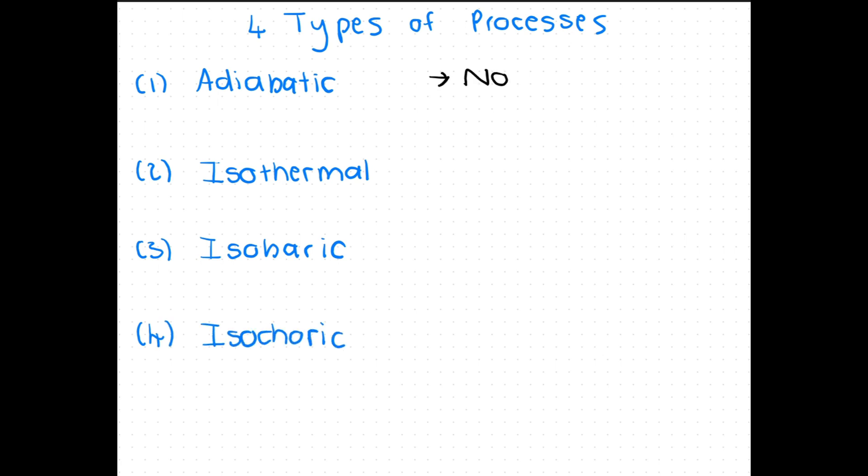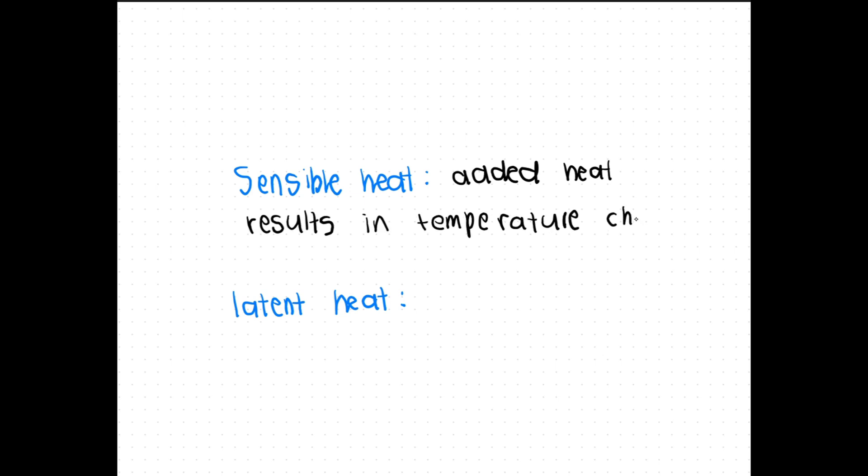Adiabatic processes are processes where there is no heat transfer. In problems or equations this is usually indicated by saying that the system is well insulated. Isothermal processes are processes where the temperature stays constant. Not to be confused with adiabatic processes, isothermal processes can still have heat flow. It is usually accompanied with a phase change. A way to remember this is that there are two types of heat: sensible heat and latent heat. Sensible heat is observed when the added heat results in a temperature change, while latent heat is observed when the heat results in a phase change.